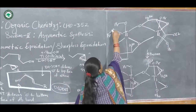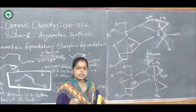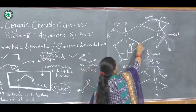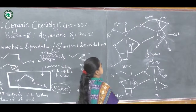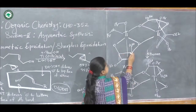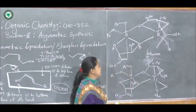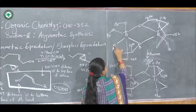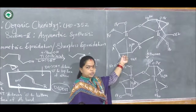Two isopropoxide molecules are eliminated and replaced by oxygen from the diethyl tartarate molecule. In this complex, each titanium is bonded to two isopropoxide groups. The two secondary OH groups of diethyl tartarate provide these oxygens, with the remaining CO₂Et groups also present in the structure.